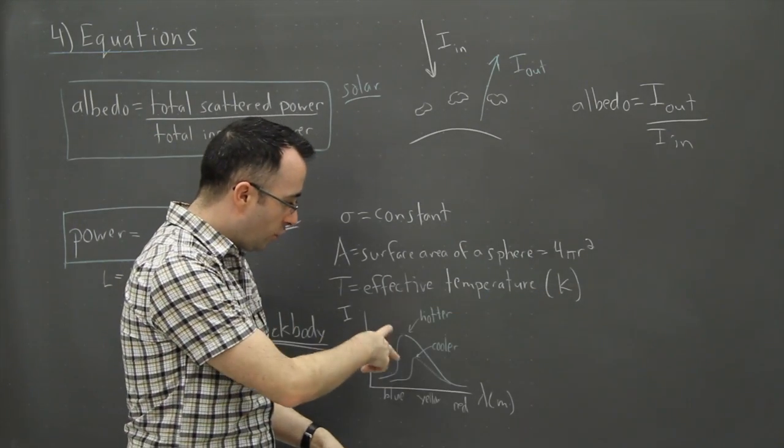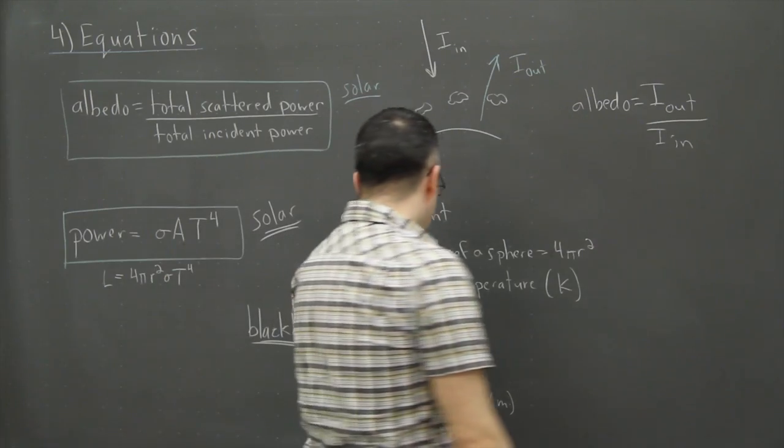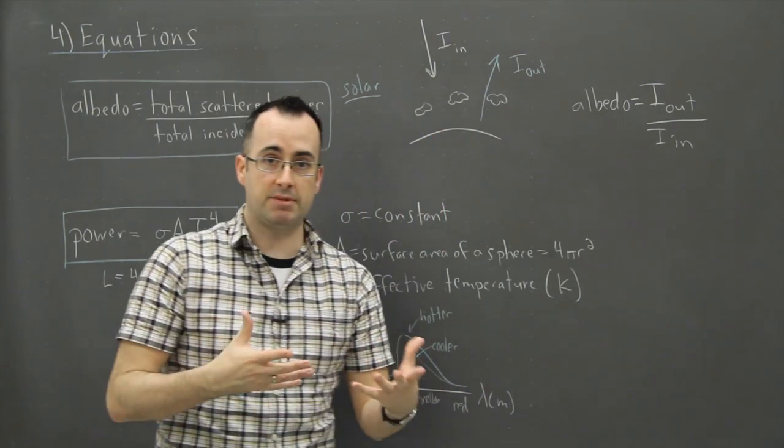So when we say an effective temperature, it's a temperature that corresponds to one of these curves here. And so what I think is really neat is that what we can do with these is we can think about actually why red things are cooler and why white things are hotter.